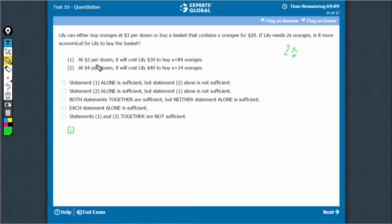Statement 1 says, at $2X per dozen, $30 would mean 15 dozens, that means 180 oranges. 180 oranges is X plus 84. So, that means X is equal to 96.